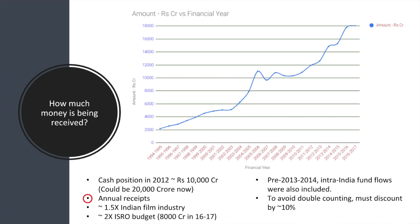To give an idea of scale, the annual inward remittance is about one and a half times the size of the entire Indian film industry across all languages, and two times the ISRO budget. Before 2013-2014, intra-India fund flows were also double-counted, so we can discount those numbers by about 10%. The key number to leave you with is that in spite of the best efforts of the current government and the FCRA Act of 2010, the money is still flowing in — in fact more than ever.